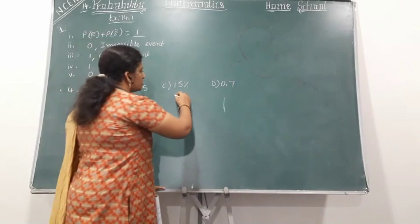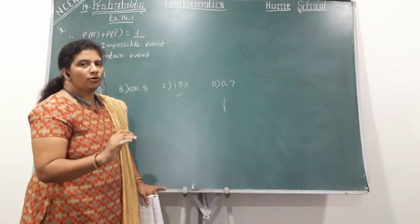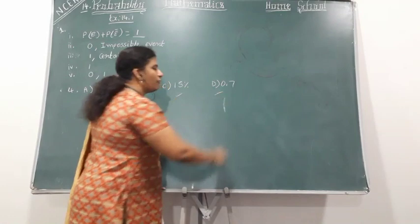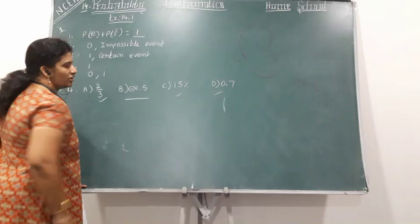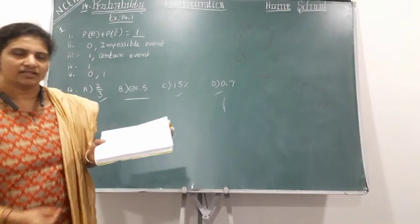Option D: 0.7 — it is more than 0 and less than 1, so this is also a probability. So, which cannot be the probability of an event? Everybody can say the answer: it is option B, minus 1.5. With these four problems done, we are going to start the fifth problem. Probability is a very easy chapter.